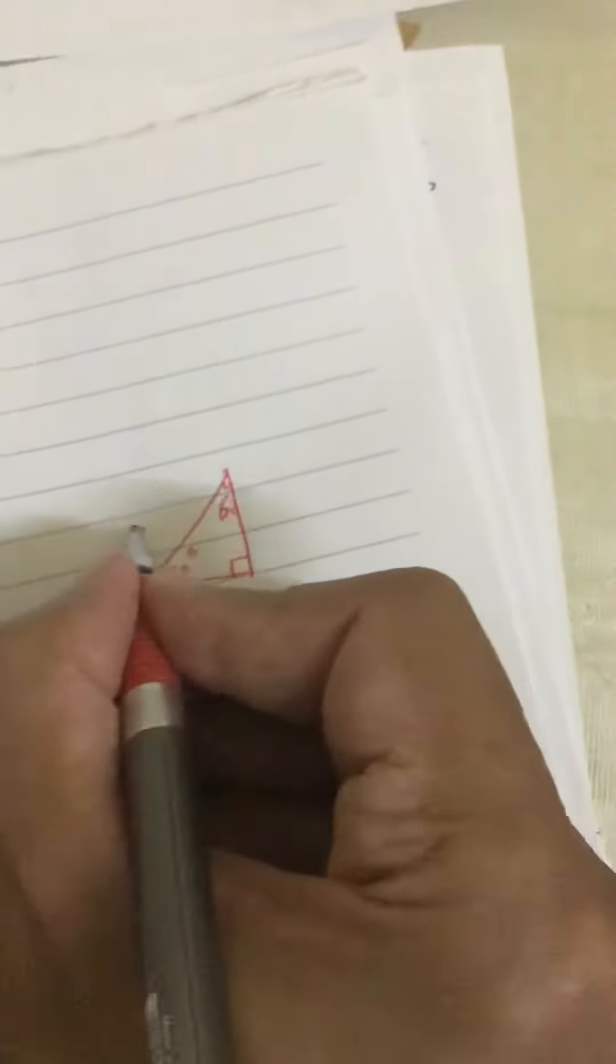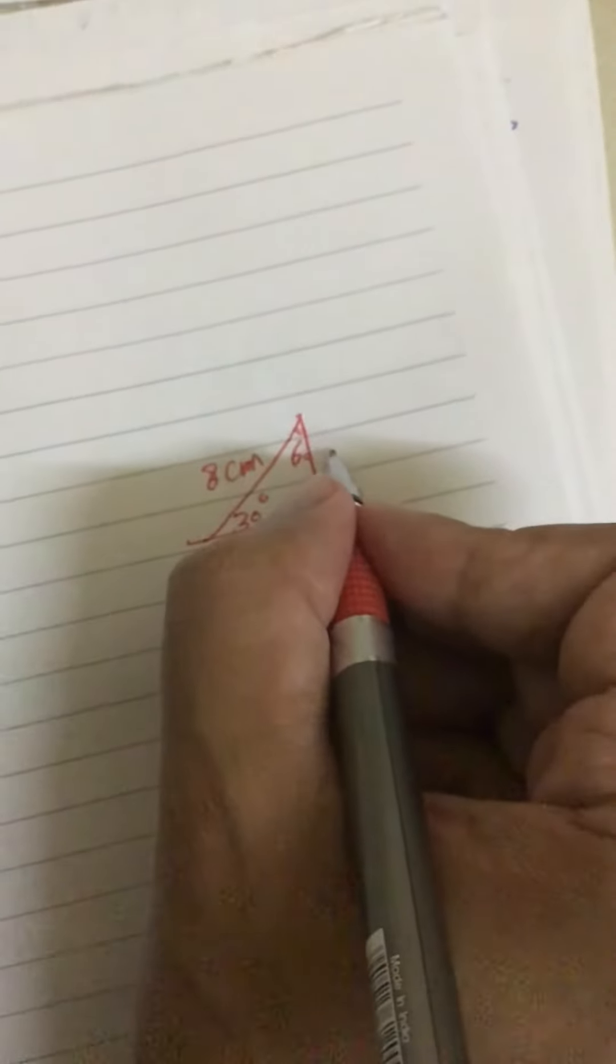Right triangle has 30 degree and 60 degree. This right triangle, this one 30 and this one 60 degree. This one 8 centimeter and we need to find the length of this side and this side.